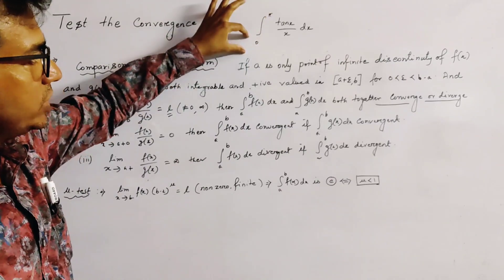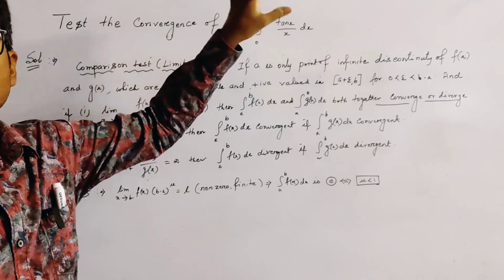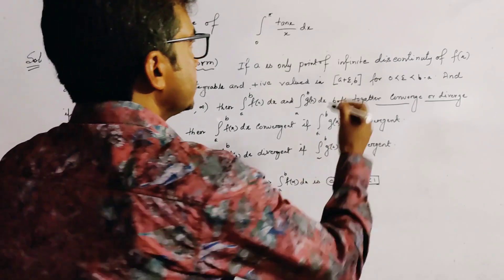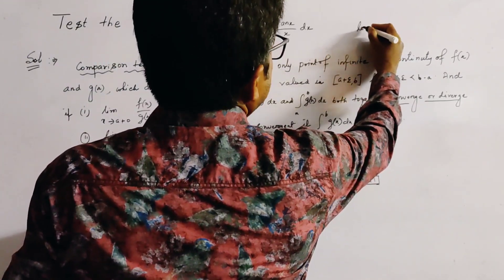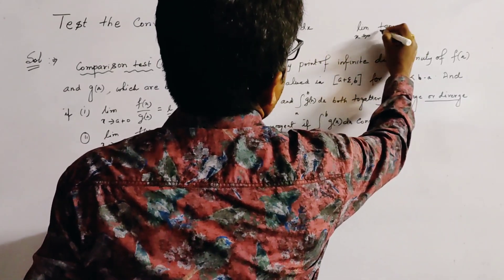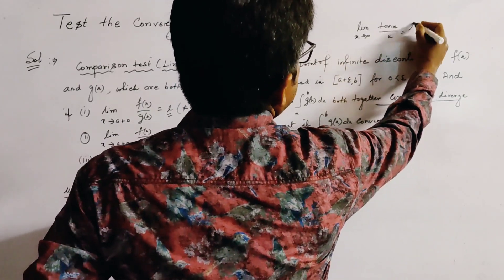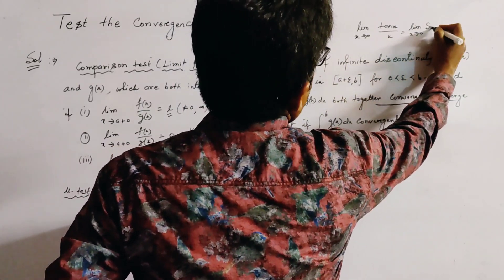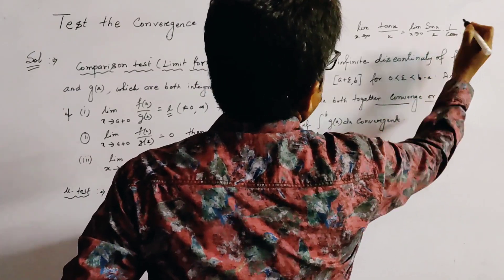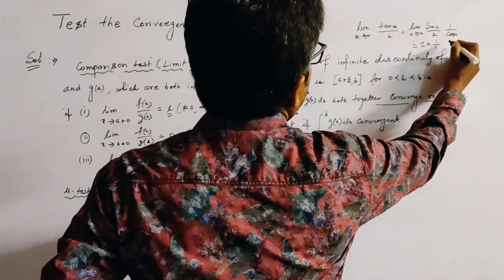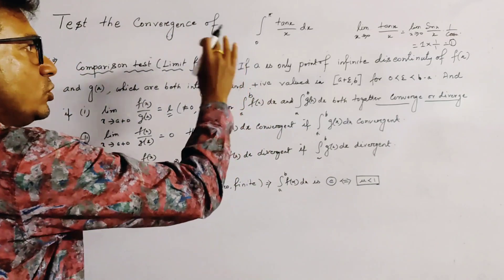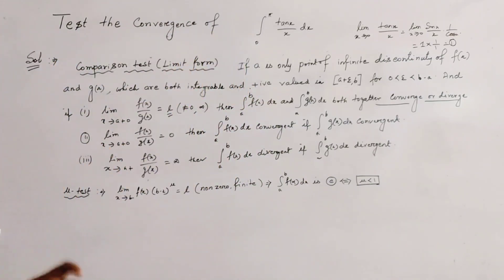But this is not true. Because if we take the limit as x tends to 0 of tan x divided by x, this is given by the limit x tends to 0 of sin x divided by x multiplied by 1 divided by cos x. This equals 1 times 1 over 1, which is 1. And since 1 is finite, 0 is not a point of infinite discontinuity.